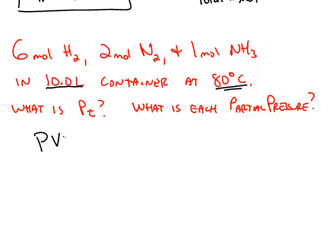Well, the total pressure we can get from PV equals nRT. So P is nRT divided by V, where n in this case is the total number of moles. It doesn't matter with PV equals nRT if we have, in this case 6 plus 2 plus 1, that's 9 moles of 3 different gases or 9 moles of 1 gas. The pressure is from the total number of moles.